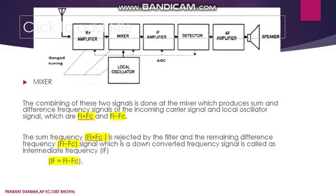The mixer is an important block. It combines two incoming signals: the RF amplifier signal represented by fc and the local oscillator signal represented by fl. The mixer produces sum and difference frequency components: fl+fc and fl−fc. The sum frequency component fl+fc is rejected by the filter. The remaining difference frequency component fl−fc is the down-converted signal called the intermediate frequency (IF), represented by fl minus fc.